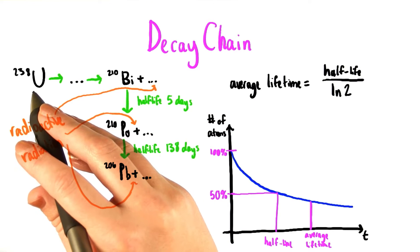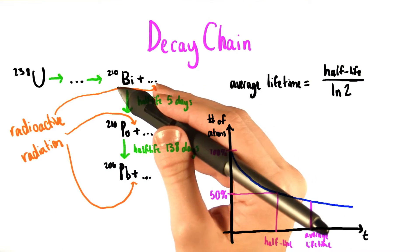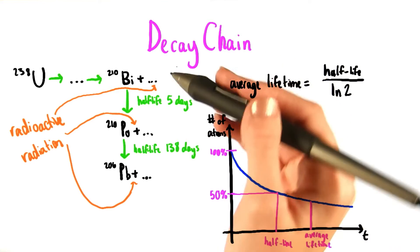So, for example, we go from uranium-238 to a string of other things that we're not going to think about right now, until eventually we get to bismuth-210, plus some radioactive radiation over here that we're not going to be concerned with.